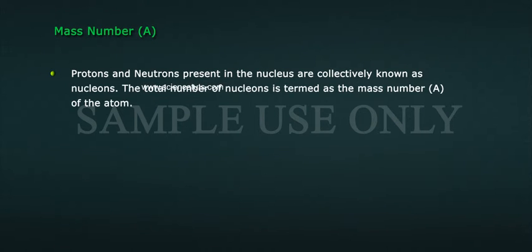Protons and neutrons present in the nucleus are collectively known as nucleons. The total number of nucleons is termed as the mass number A of the atom.